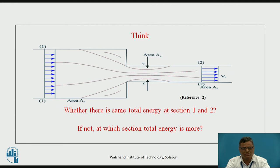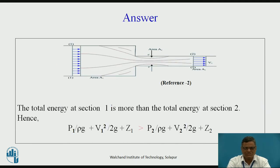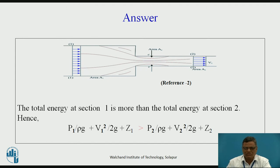Now consider whether the total energy at section 1 and section 2 is the same. If it is not the same, one section will have greater total energy than the other. The answer is that the total energy at section 1 is more than the total energy at section 2 — that is, the summation of pressure head, kinetic head, and datum head at section 1 is greater than at section 2.